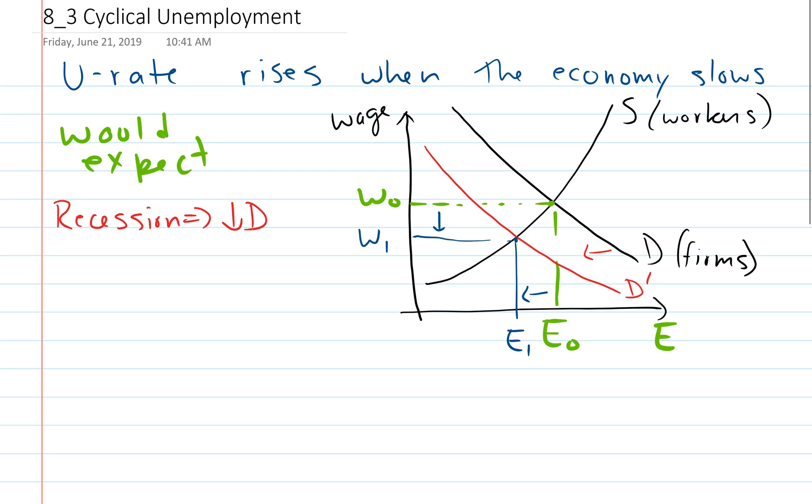So we expect wages to adjust. We expect wages fall and employment falls. But we don't expect a bunch of unemployment. We expect maybe people are not employed, but we would more expect them to leave the labor force in this case. So what's going on? Why do we get this big increase in unemployment when we have a recession? Even though our basic model doesn't predict it.